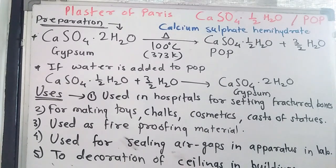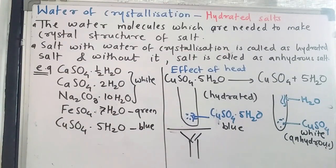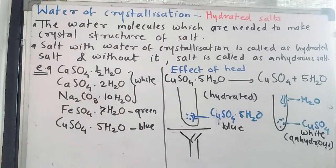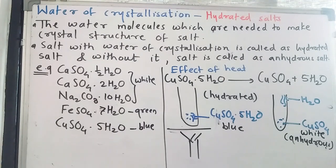Plaster of Paris has half a water molecule and gypsum has two water molecules — these water molecules are called water of crystallization. Water of crystallization refers to the fixed number of water molecules needed to form the crystal structure of a salt. Salts are always crystalline. If these water molecules are present, the salt is a hydrated salt; if removed by evaporation, it becomes an anhydrous salt and is less effective.